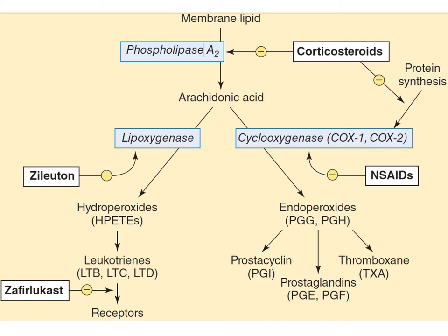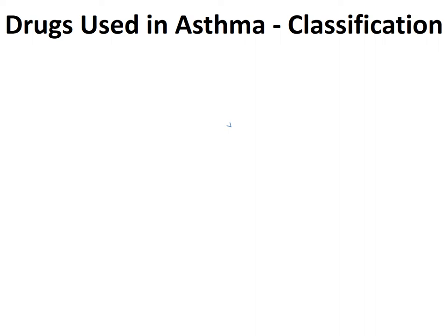All these enzymes — phospholipase A2, lipoxygenase, and cyclooxygenase — are targets of asthma therapy. Various drugs are used to prevent the generation of inflammatory mediators like leukotrienes and prostaglandins, which are the important culprits in the precipitation and progression of asthma. Apart from enzyme inhibitors, we also have receptor antagonists to block the actions of potent bronchospastic mediators. Examples include leukotriene antagonists such as montelukast and zafirlukast. Leukotrienes play the most significant role in asthma.